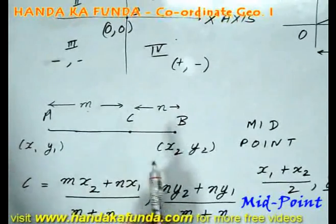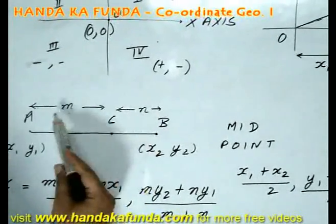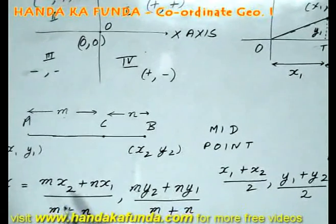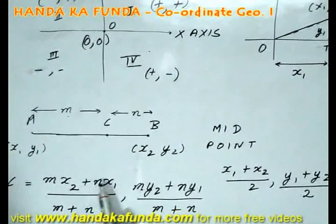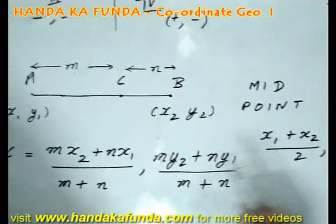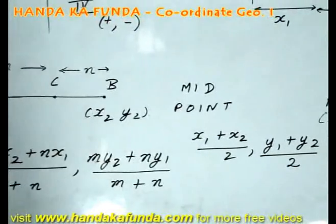So, if point C was the midpoint, then what would have happened? The ratio of m and n would have been 1 is to 1. So, in that case, what would I have got? I would have got x2 plus x1 by 1 plus 1, that is x1 plus x2 by 2 and y1 plus y2 by 2.